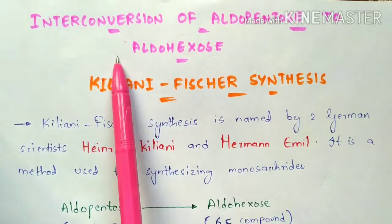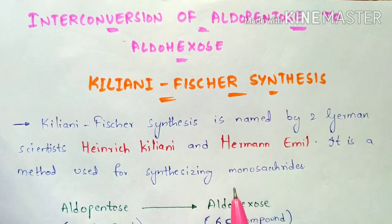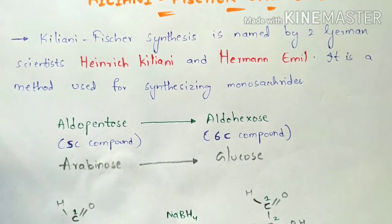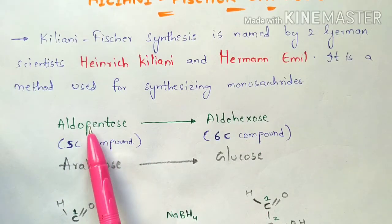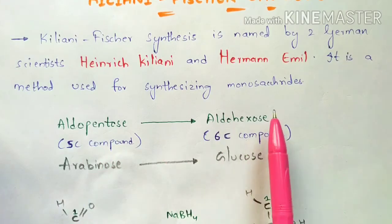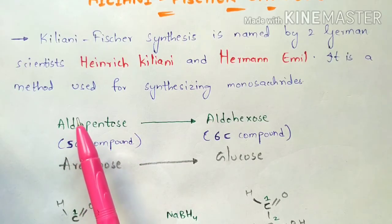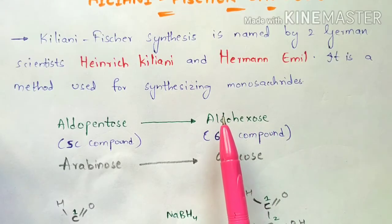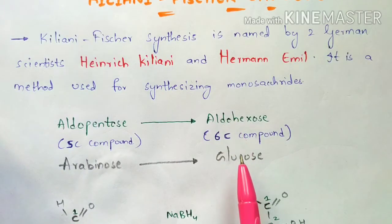Kiliani-Fischer synthesis is mainly used for synthesizing monosaccharides. Here we are doing the interconversion of aldo pentose to aldo hexose. The main aim is the conversion of aldo pentose to aldo hexose — aldo pentose is a 5-carbon compound (pentose means 5 carbons), and aldo hexose is a 6-carbon compound. Both contain an aldehyde group at the first carbon.